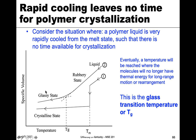This is important for amorphous materials because we never form a crystalline solid. So for amorphous materials and amorphous phases, we need to know about the glass transition temperature.